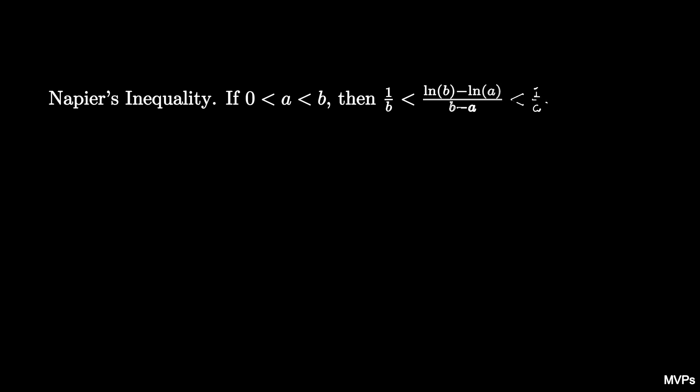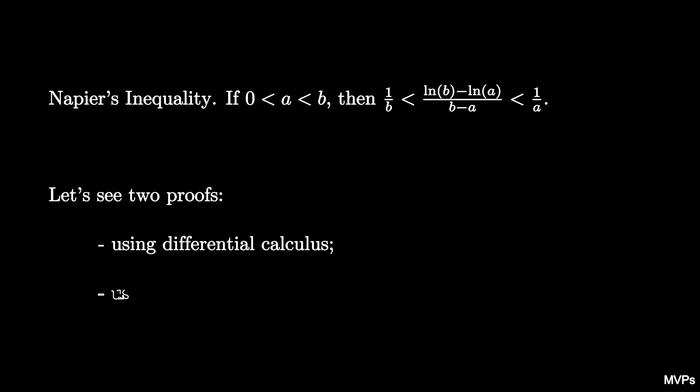Napier's inequality states that if a is less than b, then 1 over b is less than the natural log of b minus the natural log of a over b minus a, which is less than 1 over a. Let's see two proofs of this fact: the first using differential calculus techniques and the second using integral calculus.